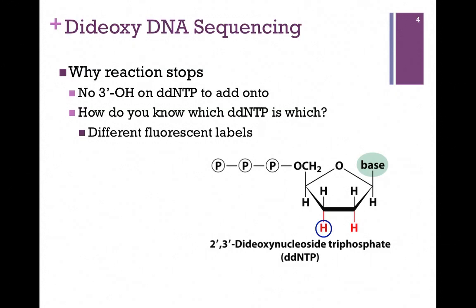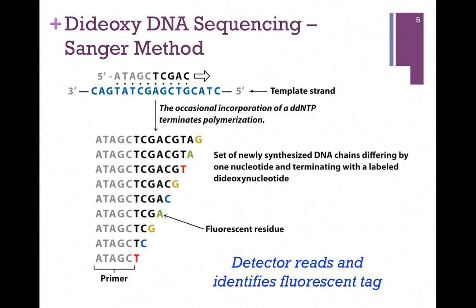That's the purpose of the different fluorescent labels. In a given reaction, we have multiple copies of the template strand and multiple copies of the primer. For any given synthesis, the DNA polymerase will bind to the primer-template pair, extend it, and randomly incorporate one of those dideoxynucleotides. In the end, we'll have a set of newly synthesized DNA chains that differ by one nucleotide and terminate with a different labeled dideoxynucleotide.